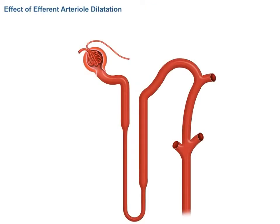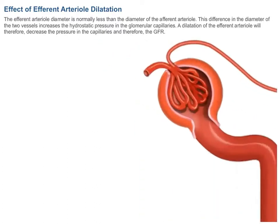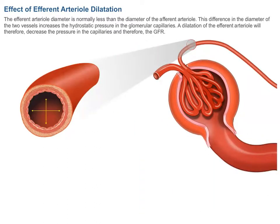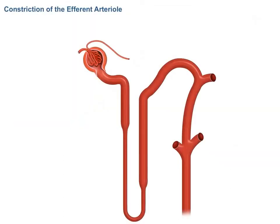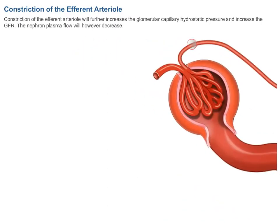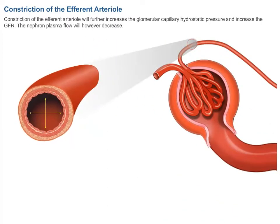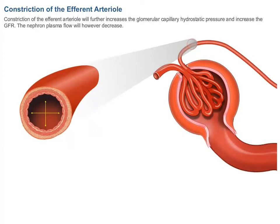Effect of efferent arteriole dilation and constriction: the efferent arteriole diameter is normally less than the diameter of the afferent arteriole. This difference in diameter maintains elevated hydrostatic pressure in the glomerular capillaries. Dilation of the efferent arteriole will therefore decrease the pressure in the capillaries and reduce GFR. Constriction of the efferent arteriole will further increase the glomerular capillary hydrostatic pressure and increase GFR, though nephron plasma flow will decrease.